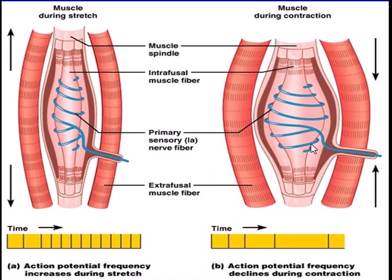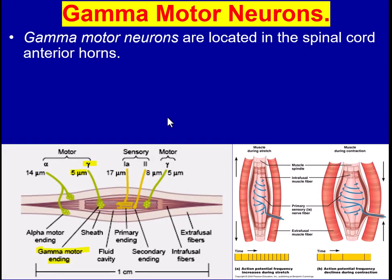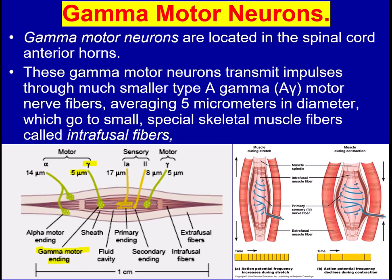Gamma motor neurons are located in the anterior horn of the spinal cord. They transmit impulses through much smaller type A gamma motor neuron fibers averaging 5 micrometers in diameter, compared to the 14 micrometers of alpha motor neurons. These small fibers go to the special intrafusal muscle fibers of the muscle spindle.